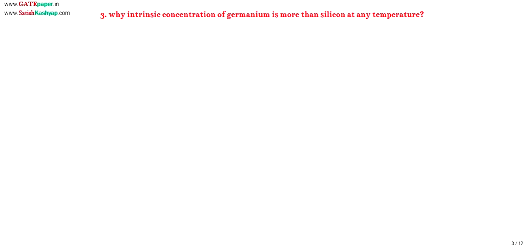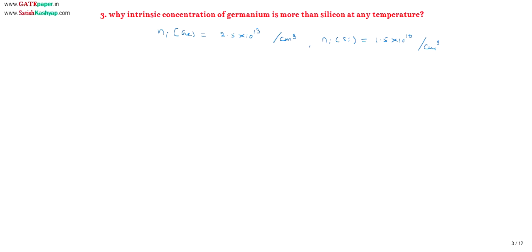Now we discuss why the intrinsic carrier concentration of germanium is more than silicon at any temperature. Intrinsic carrier concentration is indicated with Ni. Ni for germanium is 2.5 × 10¹³ carriers per centimeter cube, and Ni for silicon is 1.5 × 10¹⁰ carriers per centimeter cube. So why does germanium have more concentration than silicon?